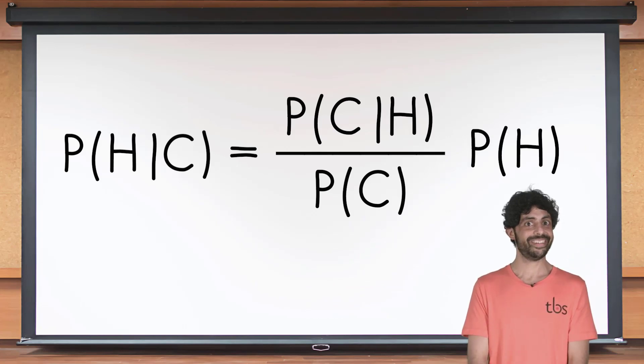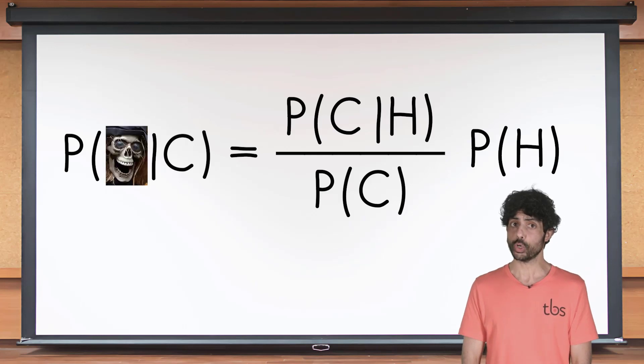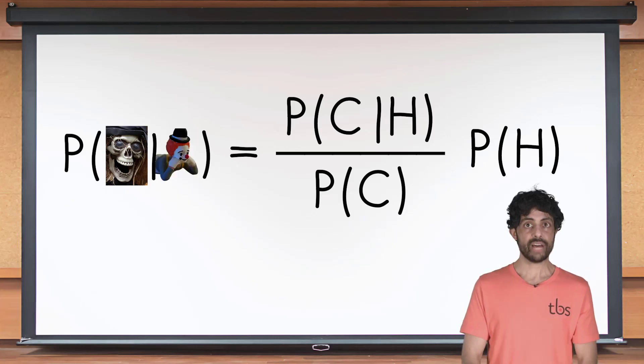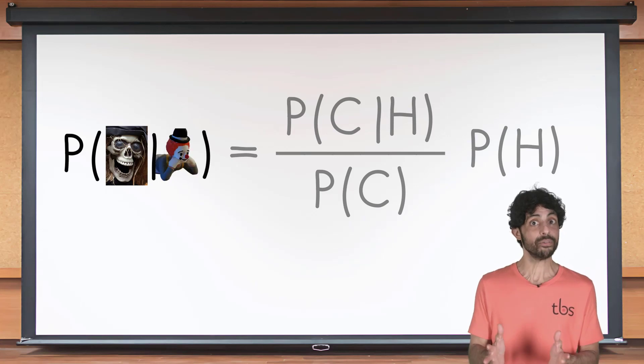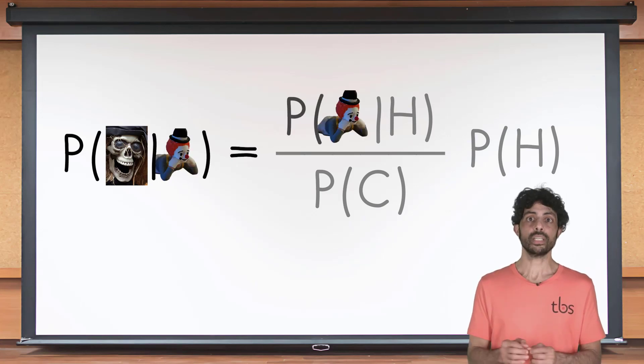In our case, H equals horror and C equals clown. What are the chances those letters worked out? Conditional on my good writing, 100 percent. Please stop. Before this clown gives me PTSD, we need to figure out P of horror given clown. Our formula becomes: P of horror given clown equals P of clown given horror divided by P of clown times P of horror.